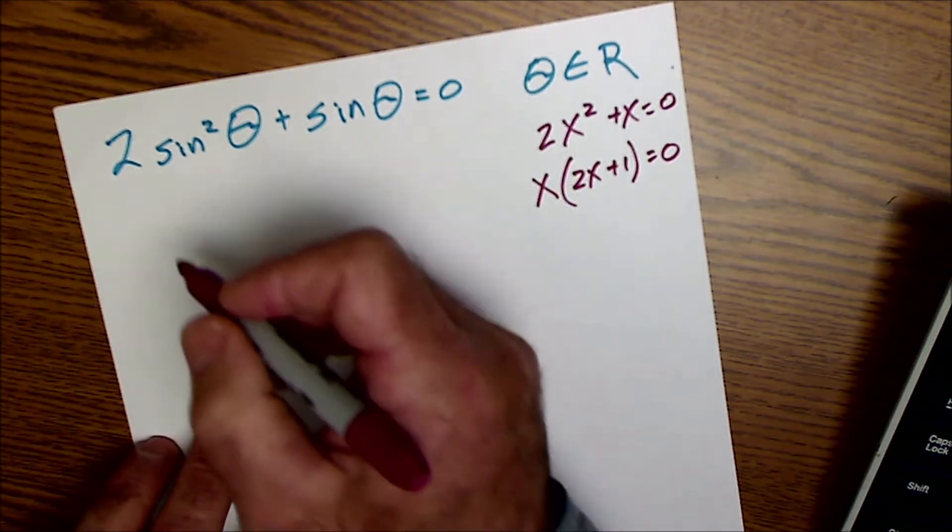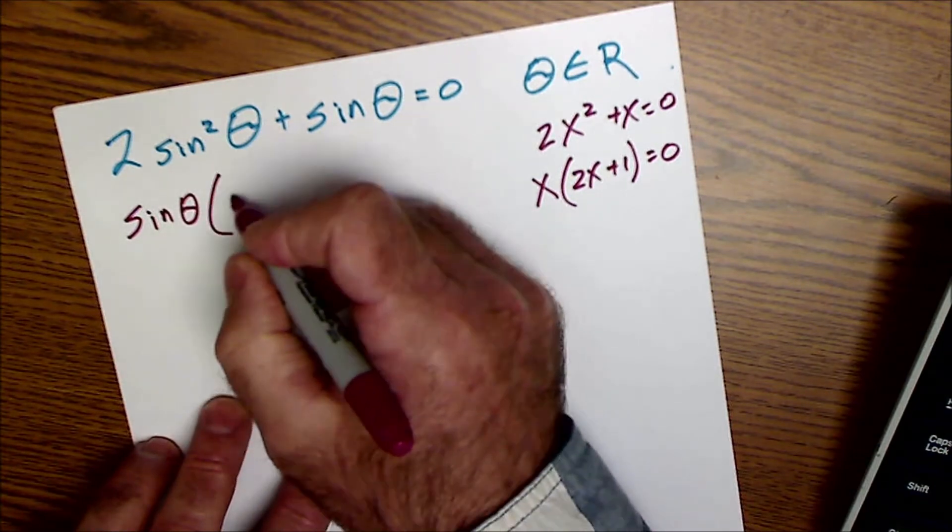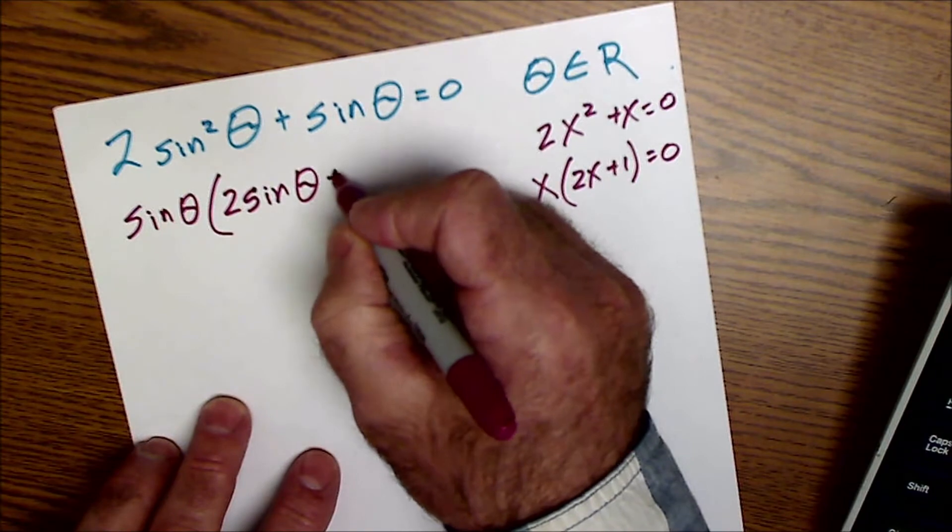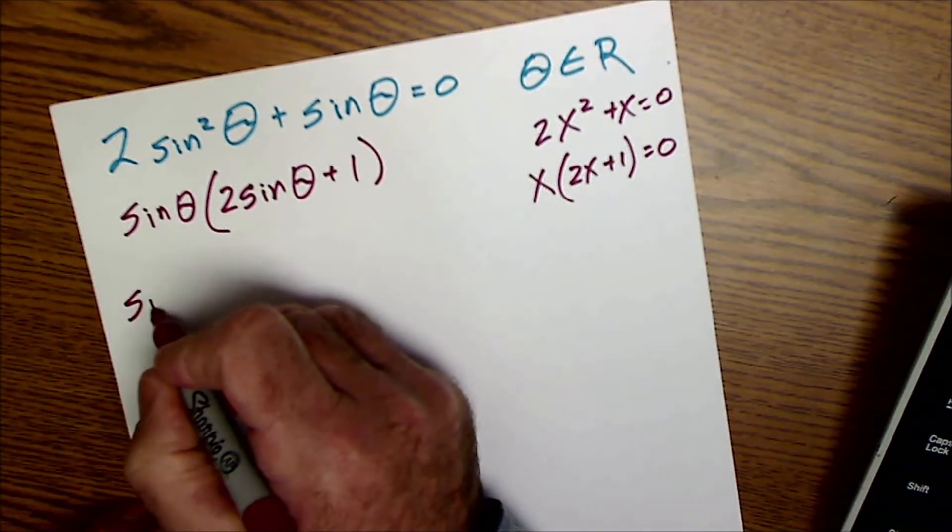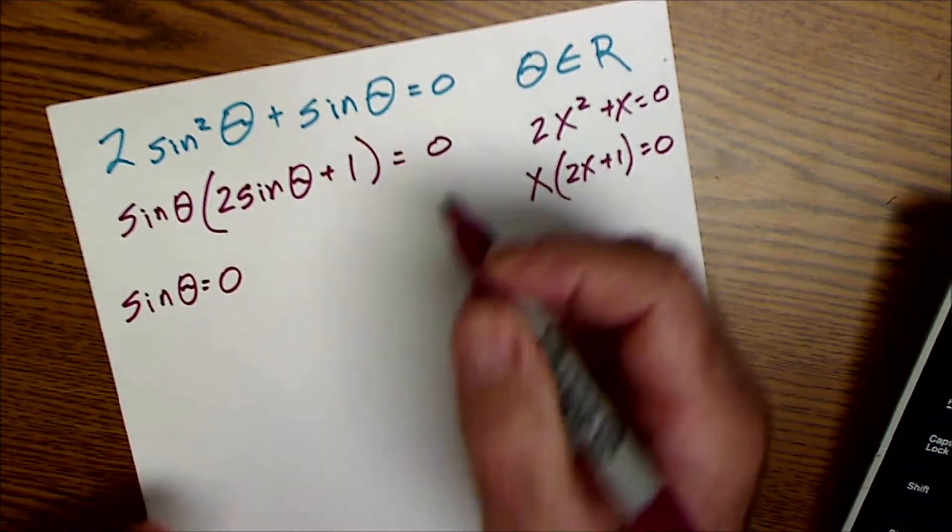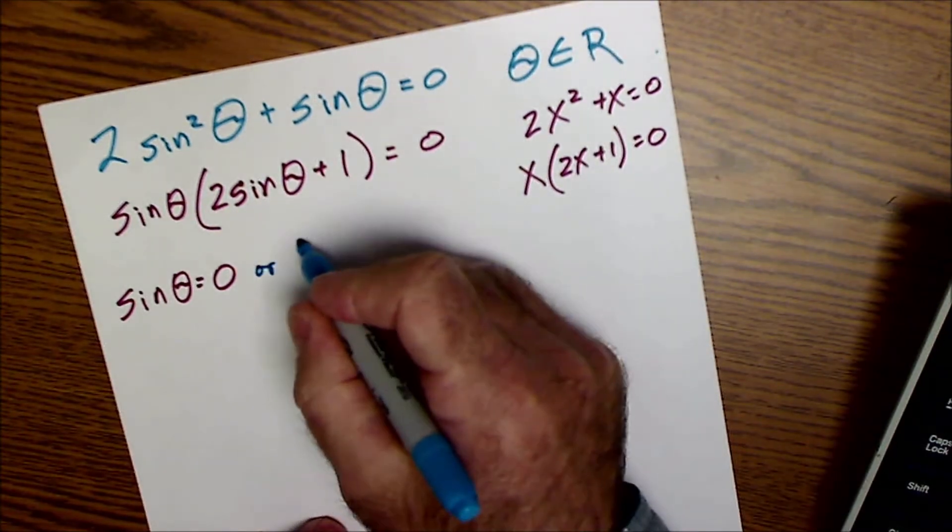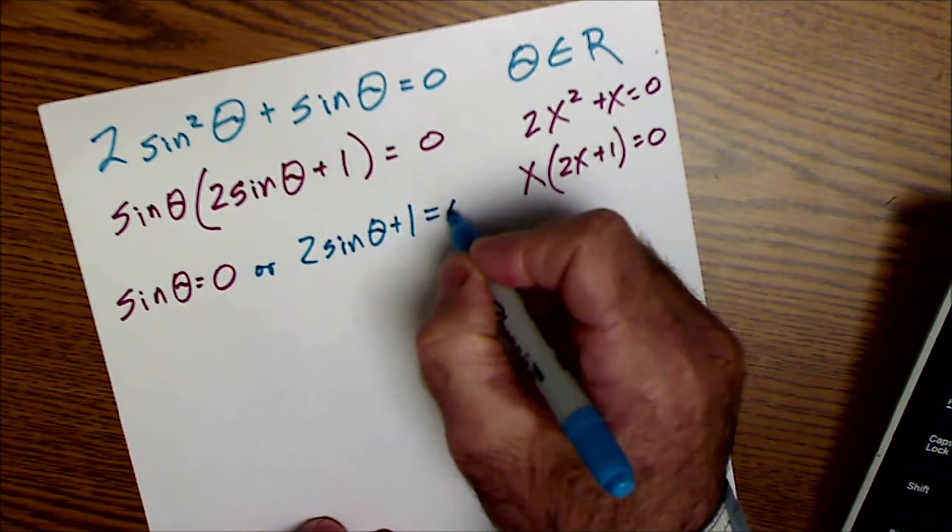I'm going to factor out a sine of theta, the common term in each. Sine of theta comes out, leaving me with 2 sine of theta plus 1. That means either sine of theta has to be equal to 0 or 2 sine of theta plus 1 has to be equal to 0.